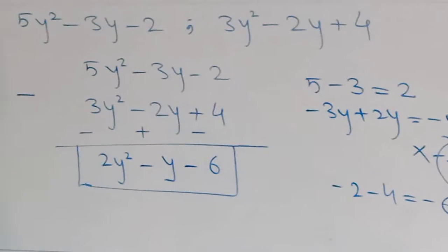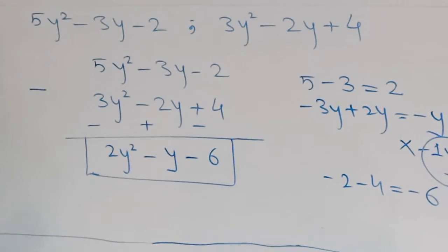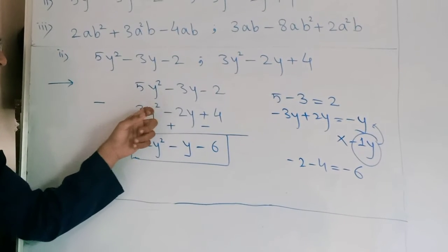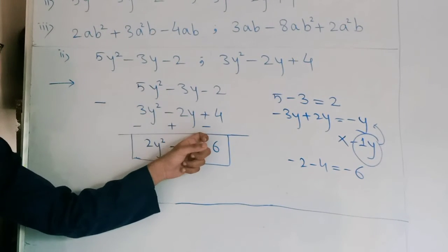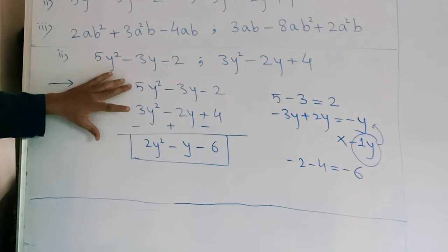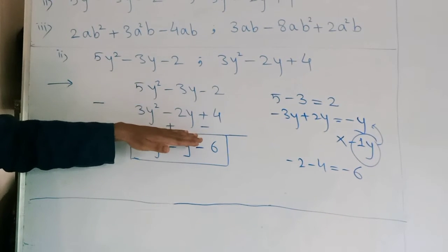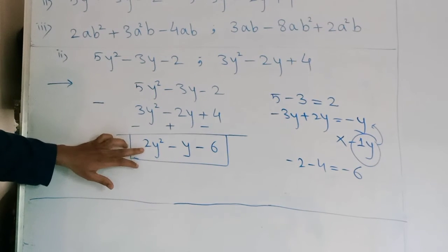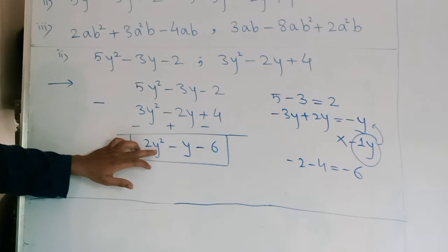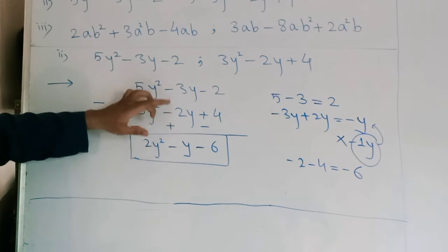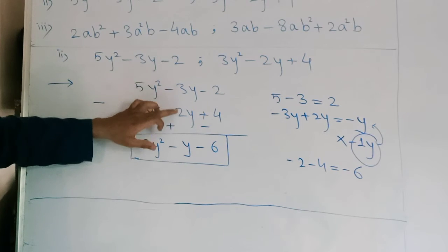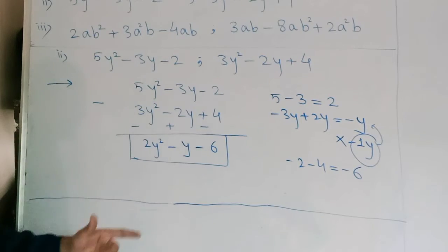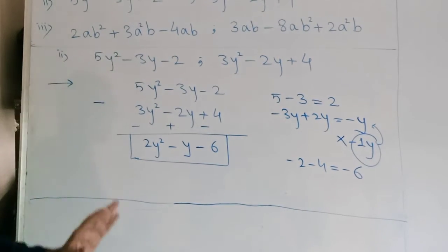So for the second example: I wrote the first polynomial 5y² minus 3y minus 2, then 3y² minus 2y plus 4, then changed all signs of the second polynomial. 5 minus 3 gives 2y². Minus 3y plus 2y: minus plus is minus, and 3 is greater so minus y. Minus minus is plus: minus 2 minus 4 gives minus 6. The answer is 2y² minus y minus 6.